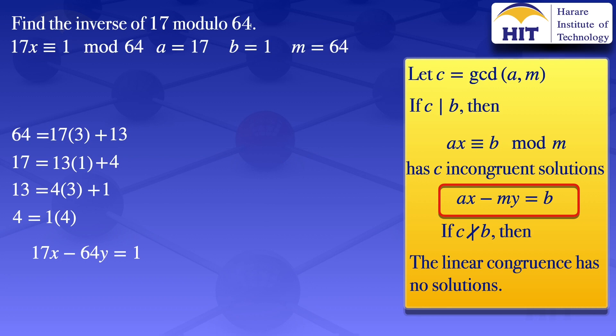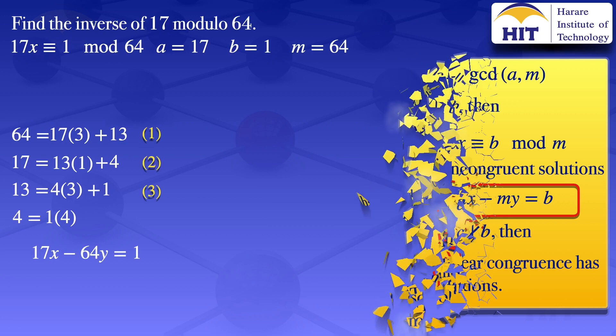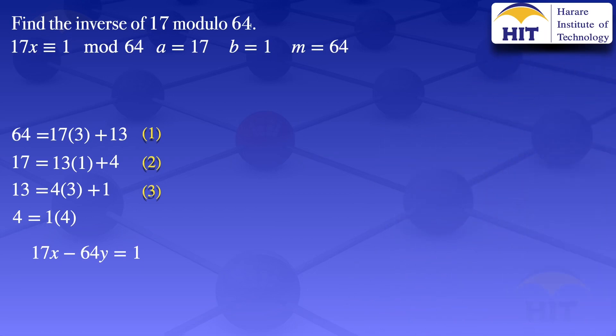To find the value of x using back substitution, I will use the equations from the Euclidean algorithm. I will label those equations number 1, number 2, and number 3. From equation number 3, we rearrange it and write 1 as 13 minus 4 times 3. So we have 1 equals 13 minus 4 times 3.